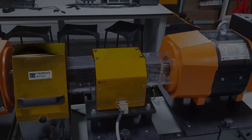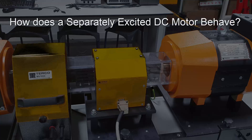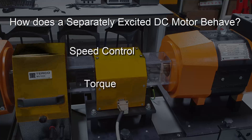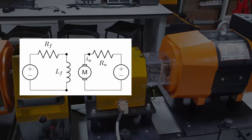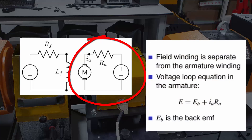So we understand now the basic construction of a DC motor. But how does a DC motor behave when it's operating? By behave I mean, for example, how do we control it? How can we change its speed? And how do we understand how much torque it produces? We need to look at the equivalent circuit of the separately excited DC machine and derive some really important equations to help us understand how it works. If we balance the voltages on the armature side of the motor, i.e. the side that spins, we can see that the electrical supply on the stationary side of the brush — we'll call this voltage E — has to be equal to the voltage drop across the armature and something that we'll call the back EMF.